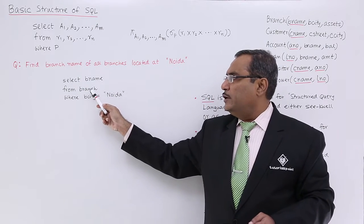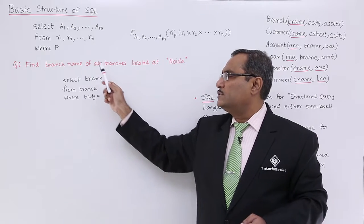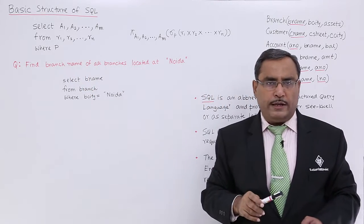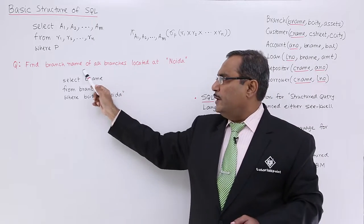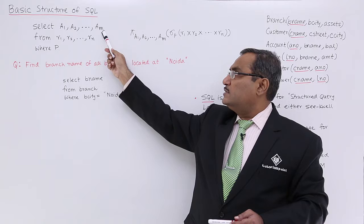Only A1 we have written—A1 is corresponding to branch_name here—FROM branch. R1 is corresponding to branch WHERE branch_city is equal to Noida. This branch_city is equal to Noida is corresponding to P, or predicate or condition. In this way the query has been written.